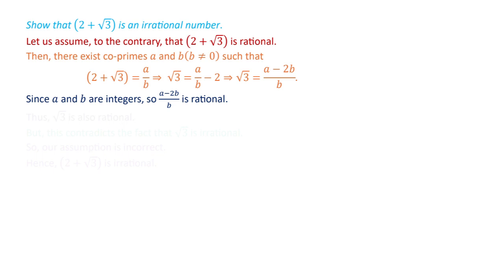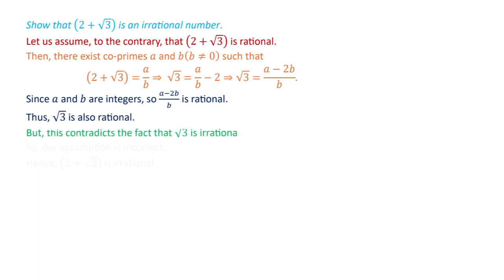If this number a minus 2b over b is rational, what we get from this is that square root 3 equals a minus 2b over b, which means square root 3 is a rational number. But this is a contradiction to the fact that square root 3 is an irrational number.